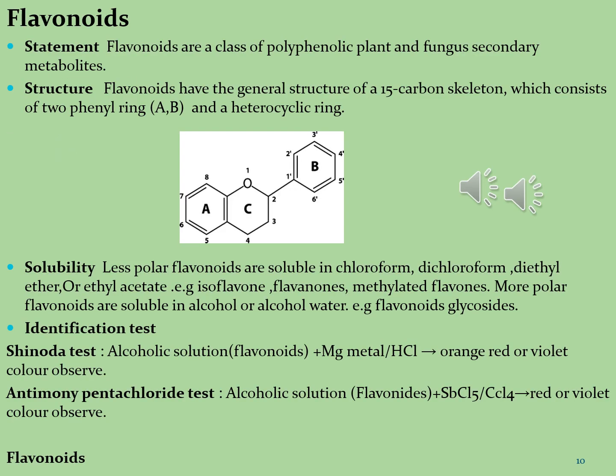Now let's see what flavonoids are. Flavonoids are a class of polyphenolic plant and fungus secondary metabolites. They are a group of plant metabolites thought to provide health benefits through cell signaling pathways and antioxidant effects. These molecules are found in a variety of fruits and vegetables. Flavonoids are polyphenolic molecules containing 15 carbon atoms and are soluble in water, consisting of two benzene rings connected by a short three-carbon chain.